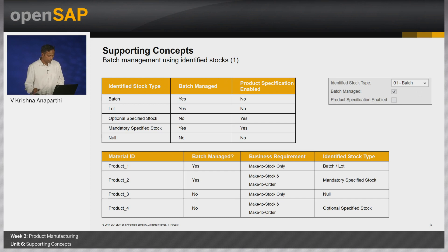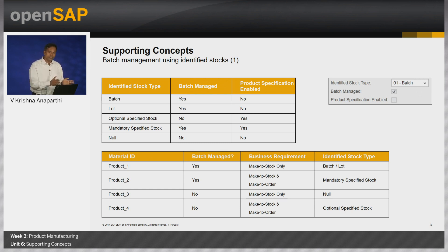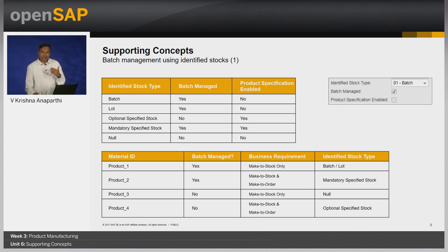For example, if I have a product which is batch managed and is required to build to stock always, then the user should select the identified stock as batch or lot. If I have a product which is batch managed but the business requirement is to build to order, then I should select mandatory specified stock. If I have a product that is not batch managed but has the business requirement to build to order as well as build to stock, then I should select optional specified stock. Based on the matrix on the slide, depending upon the combination of business requirements, the user needs to select the right identified stock type.